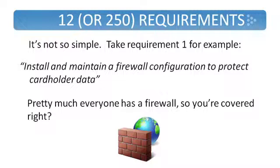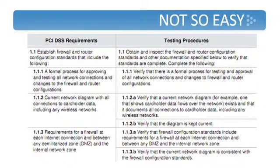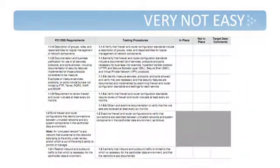Let's take the first requirement as an example: install and maintain a firewall to protect cardholder data. That seems pretty straightforward — pretty much anybody accepting credit cards over the internet is naturally going to have a firewall. But if you look at requirement 1.1, it directs you to establish firewall and router configuration standards that include the following. Then there's 1.1.1, 1.1.2, 1.1.3, and on and on — very specific directives on how you need to configure your firewall. For every single requirement in the PCI list, there are many detailed, specific sub-requirements telling you exactly how to implement your security controls. As you can see, this requirement keeps going all the way down to 1.2.1a and perhaps even beyond that.